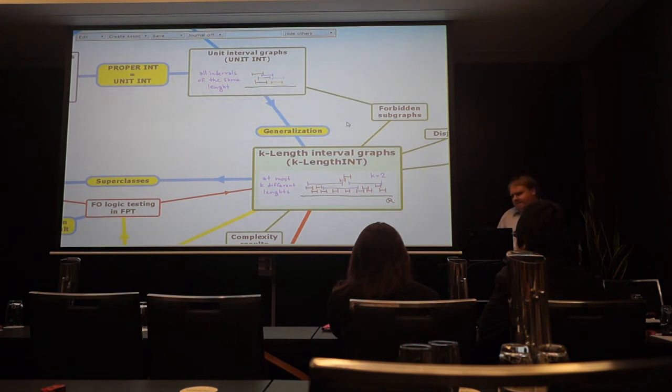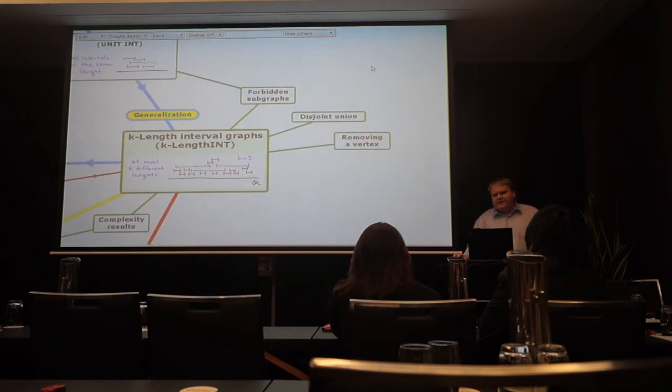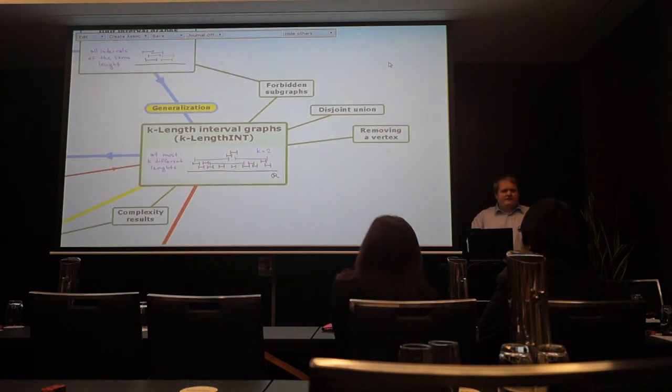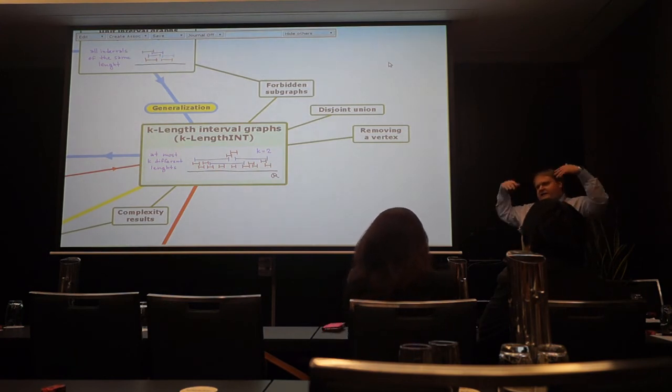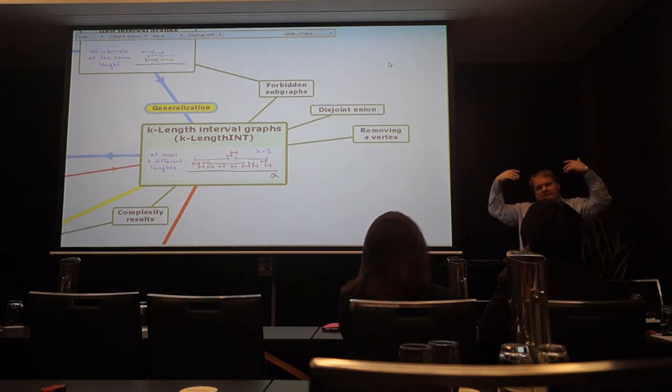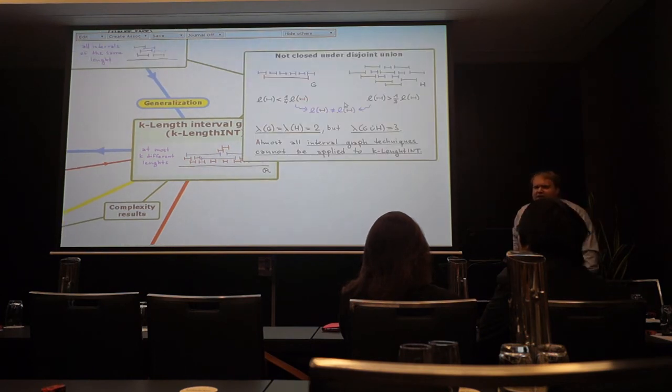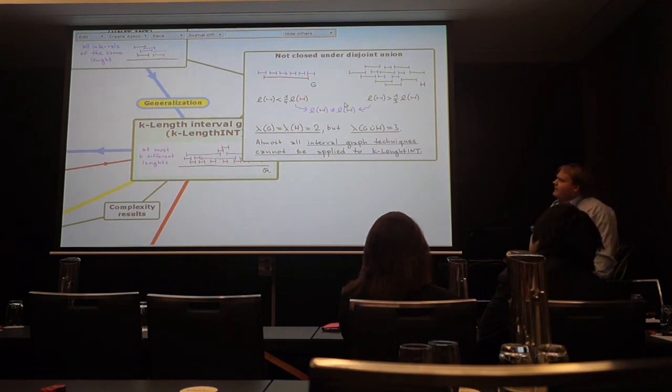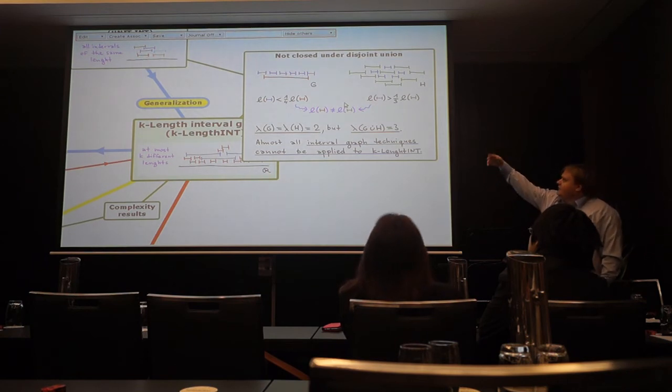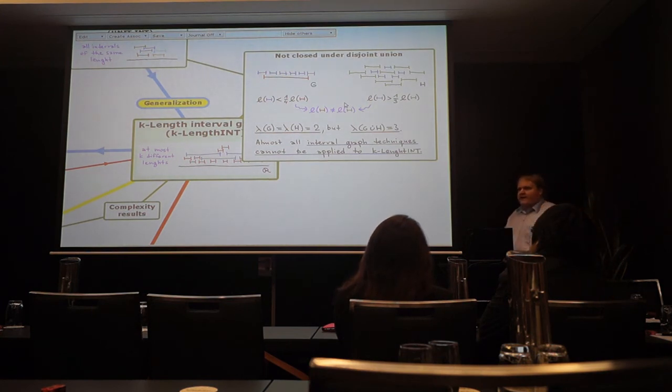And unfortunately it didn't work out that way. The reason is because the geometry remains insanely complicated. Let me give you a simple example. What I would like to have is that my class is closed under disjoint union. If I take say two graphs representable by two different lengths. I put them next to each other. I want it to be representable by two different lengths. Not really. Here's an example of two graphs. On the left you construct it in the way that short interval is much shorter than the red guy. On the right you construct it that it's not so much shorter. When you put it together you require three different lengths.